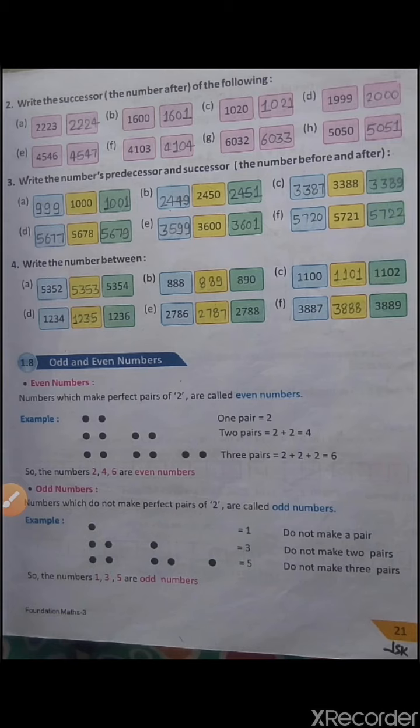Look at the next question. The predecessor of the number is 888, so what will be the number? The number will be 889 because the successor of this number is 899. In C, 1100 is the predecessor, so the number will be 1101.